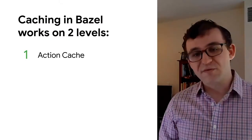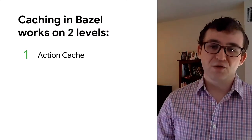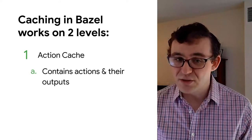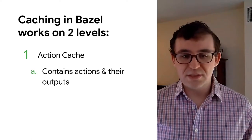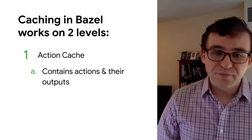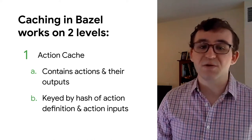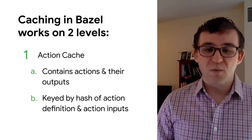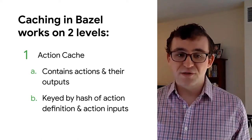Caching in Bazel works on two levels. This explanation holds for both a remote and a local cache. The first level is the action cache. Bazel will look at each action it would want to run and compute its hash. This hash contains the definition of the action — think the environment variables it uses, the list of output files it's going to create, the command line to actually run the action, and a combined hash of all the input files to the action. When you get a cache hit, the action cache will tell you what the digests of the outputs are, so you can go and look them up.